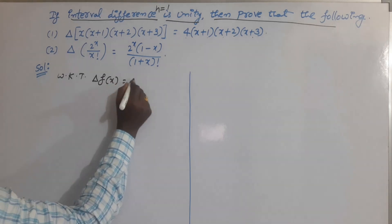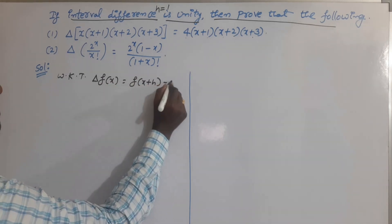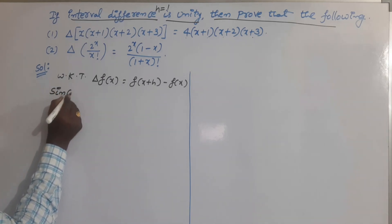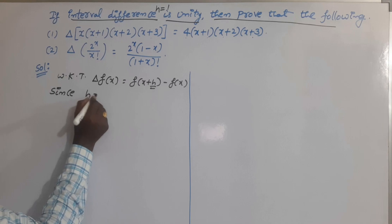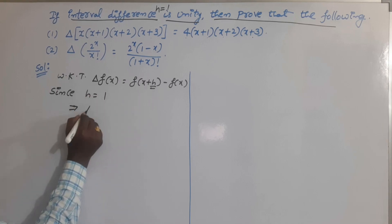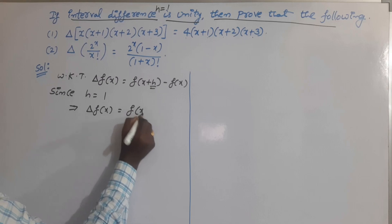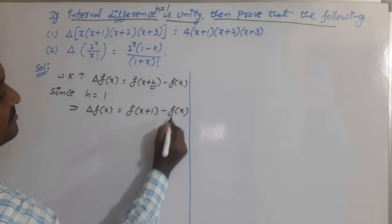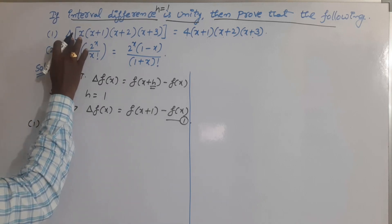According to the definition of the first order forward difference operator, delta f(x) is equal to f(x+H) minus f(x). Since in the statement H is given as 1, delta f(x) becomes f(x+1) minus f(x). Take this as equation number 1.